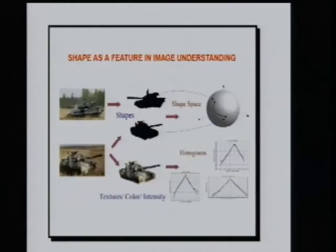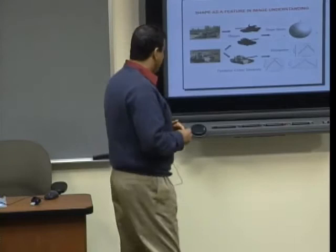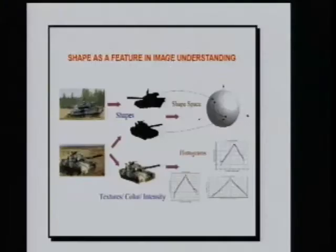What is done traditionally in image analysis — if you look at the amount of information present in an image for an object of interest, you can break it up into two pieces: information about the colors and textures on the object, and information about the shape formed by the boundaries of the object as it appears in images. I want to pursue this second stream of information.